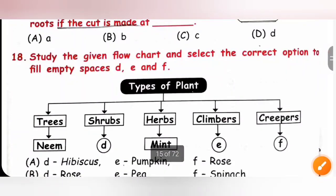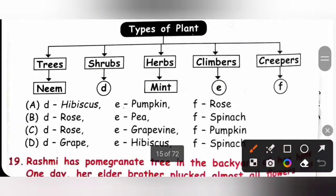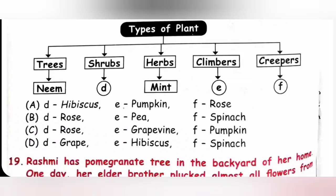Eighteenth, study the given flow chart and select the correct option to fill empty spaces D, E and F. Please check the given flow chart. D is a shrub. We know hibiscus is a shrub, rose is a shrub. Option D: grape is a climber, so option D is incorrect. Next E is a climber. Here pumpkin is a creeper and pea is a climber and grapevine is a climber. So option A is also incorrect. Next F is a creeper. Out of this spinach is herb. So pumpkin is a creeper. So option C is the correct answer. D is rose, E is grapevine and F is pumpkin. Option C.